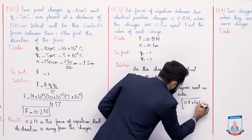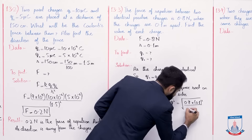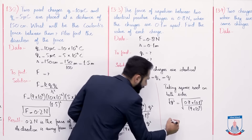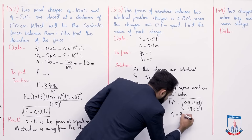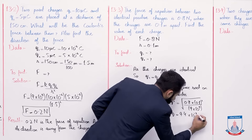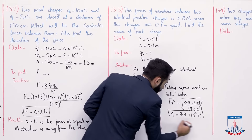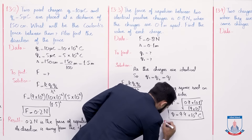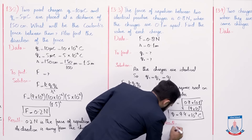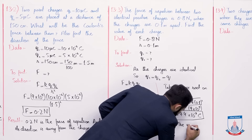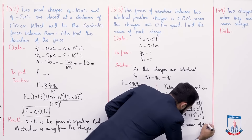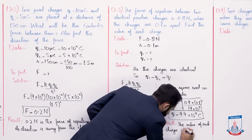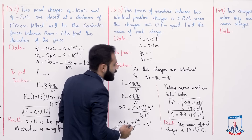Divided by 9 multiplied by 10 raise to the power 9. So we will solve, and the final q answer is 9.4 multiplied by 10 raise to the power minus 7 coulomb. So this is the value of each charge, that is 9.4 multiplied by 10 raise to the power minus 7 coulomb. So now write the result: the value of each charge is 9.4 multiplied by 10 raise to the power minus 7 coulomb.